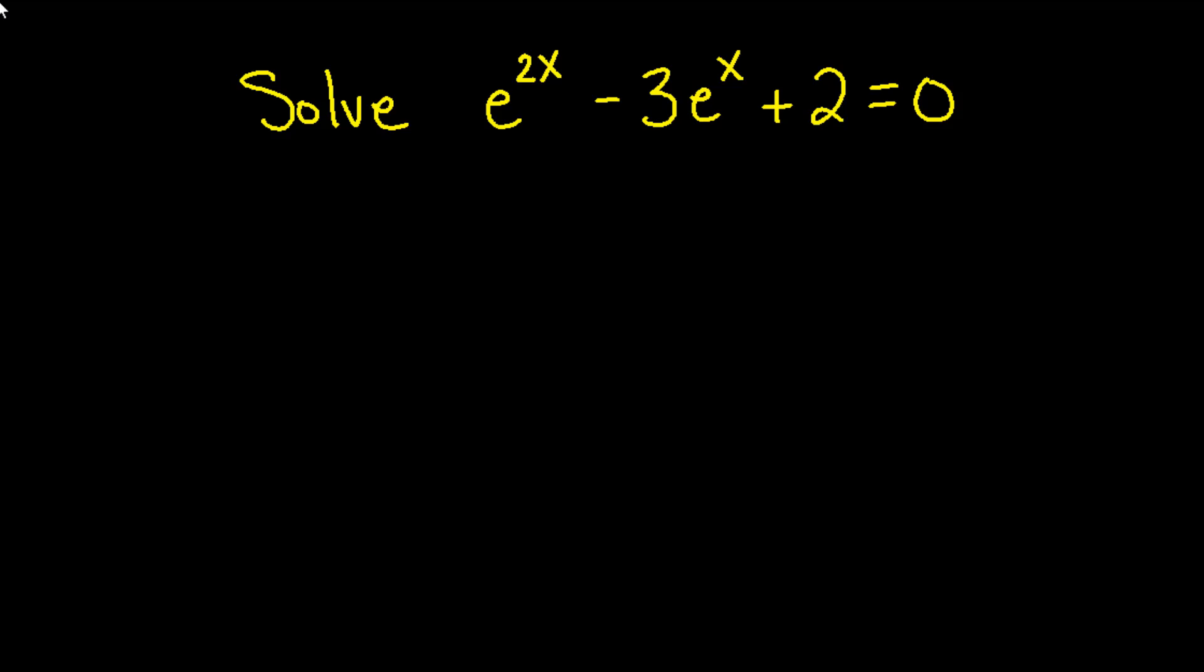This problem is in the form of a polynomial with e as the base rather than an x. Oftentimes we use what's called a u substitution for these problems where we set u equal to e to the x and if we were to square that we get u squared equals e to the 2 times x which is e to the 2x.